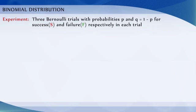For listing all the possible cases for the probabilities of number of successes in n Bernoulli trials, a formula is derived. Let us take the experiment made up of 3 Bernoulli trials with probabilities p and q equal to 1 minus p for success and failure respectively in each trial.